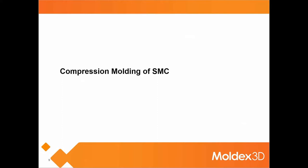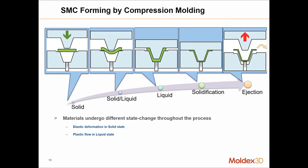For compression molding of SMC materials, you start off with a solid preform or charge, place it in the mold, and if the material is pliable it will drape. With heat and compression, the material transitions from solid to a liquid-like state. During this liquid phase it is compressed to create a final shape, then solidifies into the final part and is ejected.